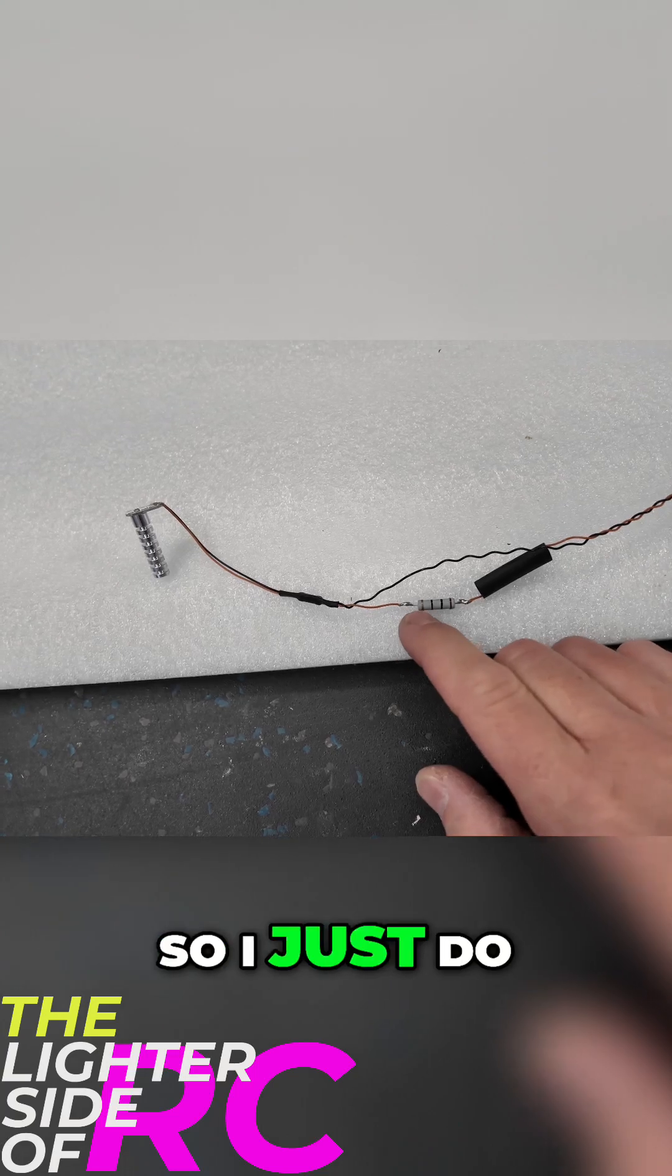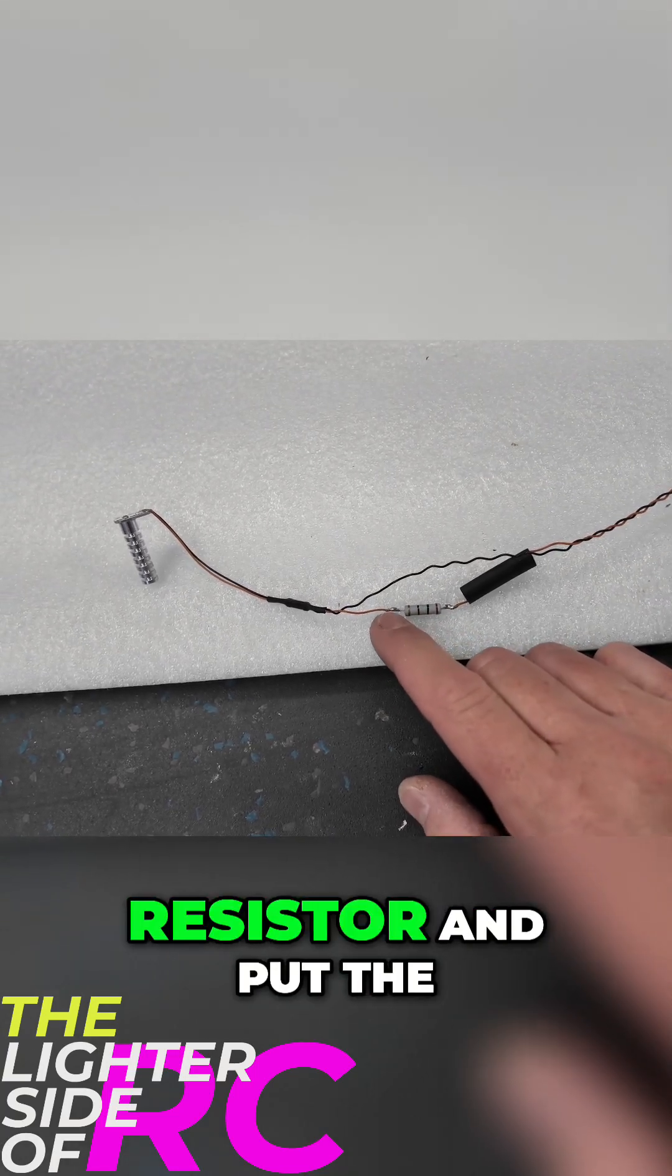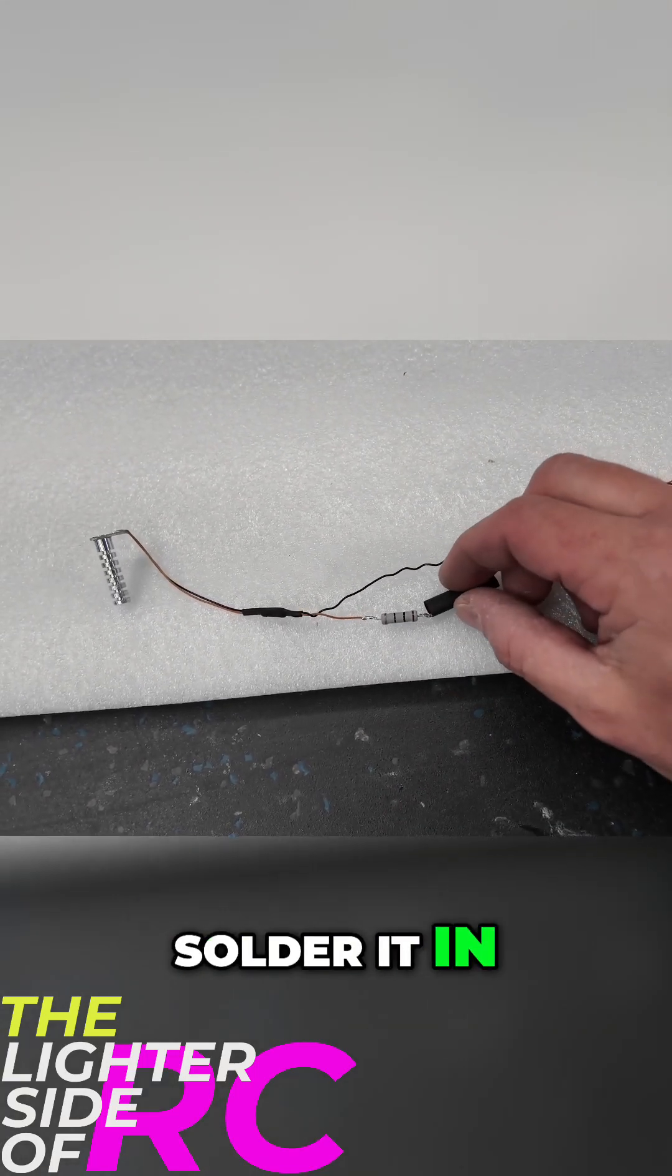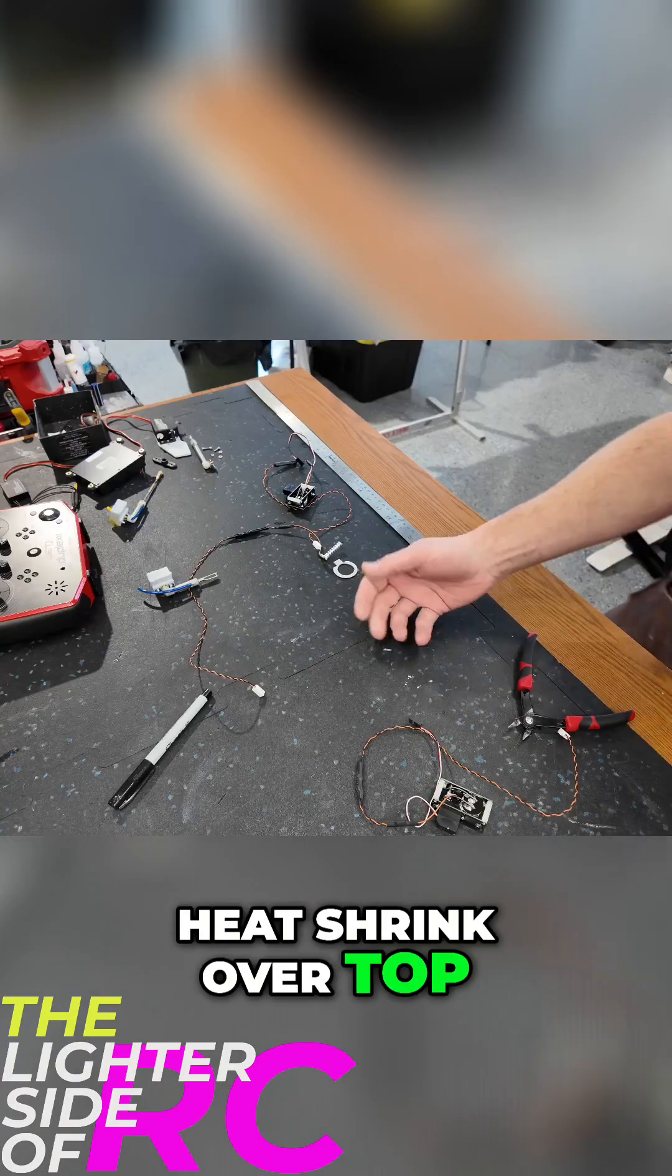All right, so that's what it looks like when you put the resistor in there. I just do a little loop on each side of the resistor, put the wire in there, solder it in, and we'll put the heat shrink over top of it.